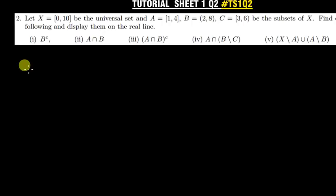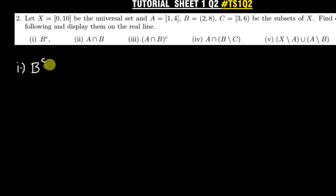We'll quickly begin. X is the universal set. So we are now going to find B complement. B complement means we are listing whatever is not in B but is in the universal set. So B complement means we are listing what is in the universal set but is not in B.